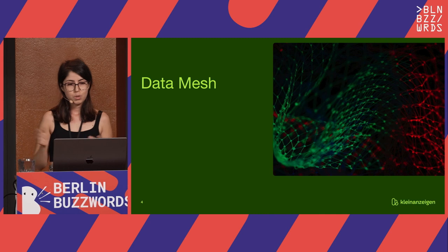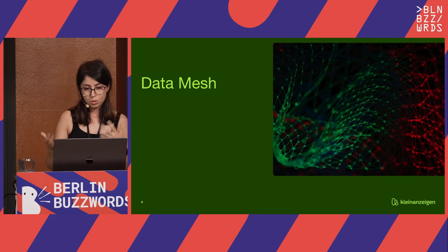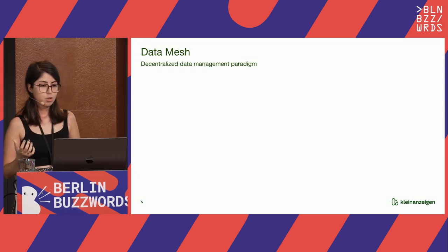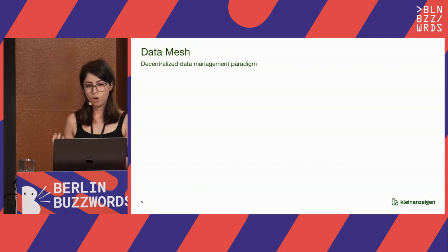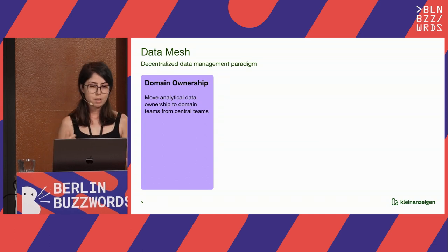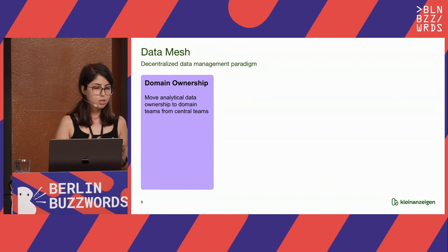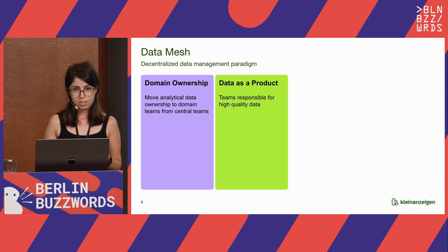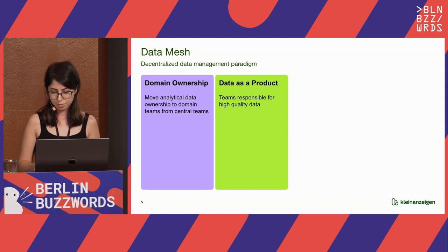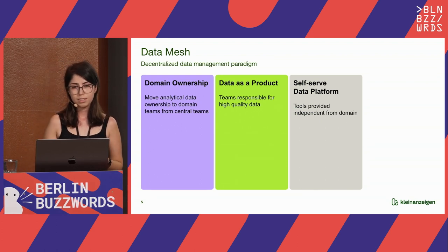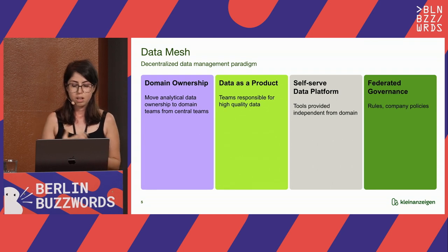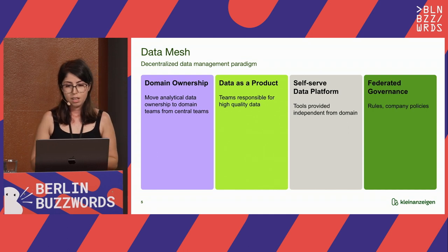Before diving into the new cloud design, I want to give you a quick recap about data mesh. Data mesh is the decentralized data management paradigm, introduced by Zhamak Dehghani, and it has four main important points. First is domain ownership — you need to move the analytical data ownership to the domain teams, not central teams. Second is data as a product — domain teams should be responsible for delivering high-quality data. Third, self-serve data platform means tools should be provided that are domain-agnostic, so every team can just grab the tools and build their own data pipeline. Last, federated governance means there should be rules or company policies to keep, ingest, or store the data, including GDPR rules.